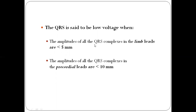In the limb leads, if the total QRS amplitude including all three components is less than 5mm — that is, less than five small squares — it is called a low voltage ECG. Similarly, the QRS amplitude in the precordial leads, which are V1 to V6, has its own threshold.